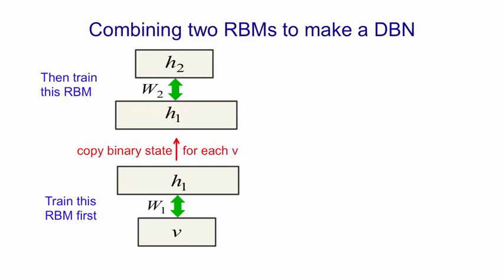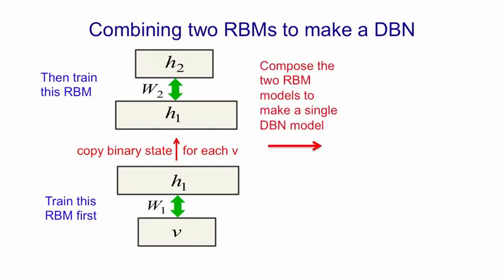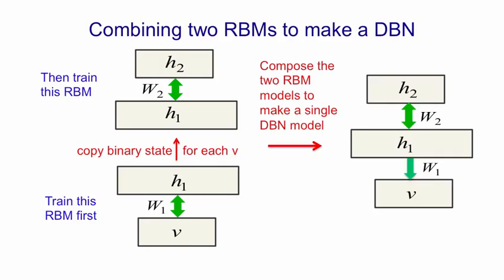After we've learned those two Boltzmann machines, we compose them together to form a single model. The top two layers are just the same as the top restricted Boltzmann machine — an undirected model with symmetric connections. But its bottom two layers are a directed model, like a sigmoid belief net. So we've taken the symmetric connections between V and H1 and thrown away the up-going part, keeping only the down-going part. The resulting combined model is not a Boltzmann machine, because its bottom layer of connections are not symmetric. It's a graphical model called a deep belief net, where the lower layers are just like sigmoid belief nets and the top two layers form a restricted Boltzmann machine.